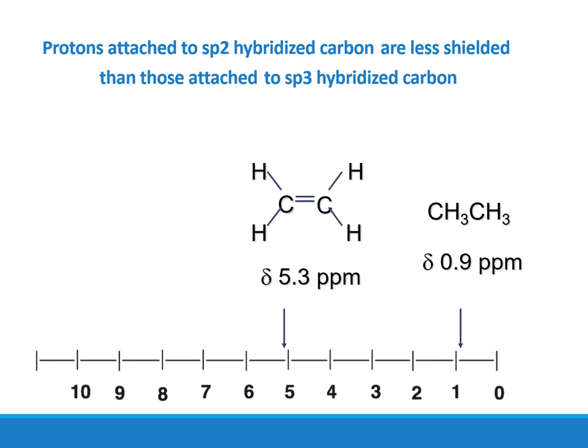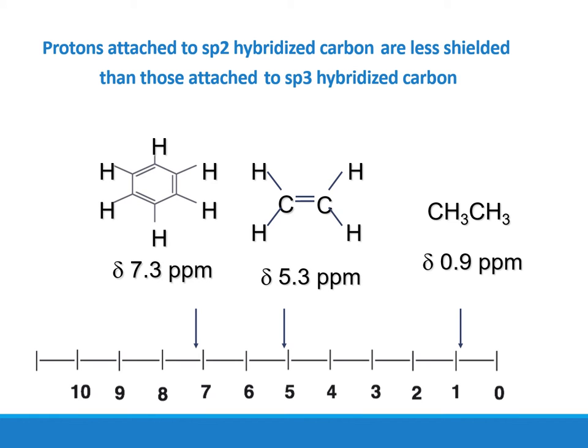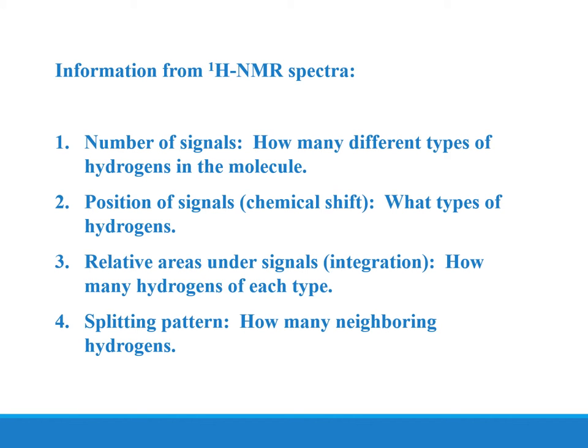Protons attached to sp2-hybridized carbons are less shielded than those attached to sp3-hybridized carbons; therefore, aromatic rings tend to appear more in the downfield region. The information obtainable from a proton NMR spectrum includes: the number of signals (how many different types of hydrogens), the position of the signals or chemical shift (what types of hydrogens), the relative areas under the curve or integration (how many hydrogens of each type), and the splitting pattern (how many neighboring hydrogens).